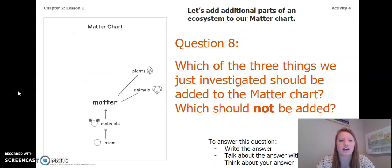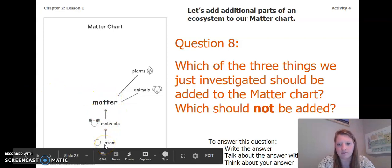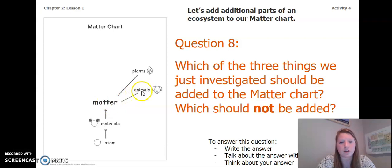Okay, so now let's look at our matter chart that we have been filling out. So we can see that for matter, it starts with an atom, which is our smallest thing that everything is made out of. Then one or two or more atoms combined creates a molecule and molecules make up matter. So animals are made up of matter, plants are made up of matter. Now, which of the three things we just investigated should be added to the matter chart, and which should not be added?